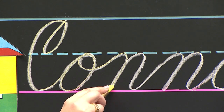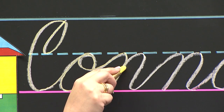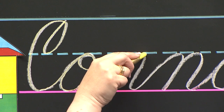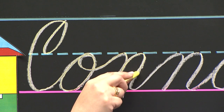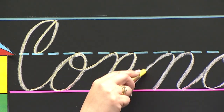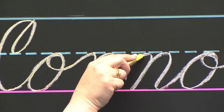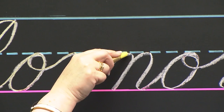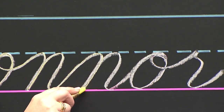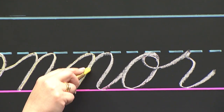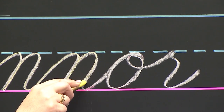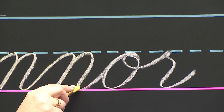I retrace back up the same line, and I curve at the dotted line. I come down to the pink carpet, and I go right back up to the dotted line. I curve around down to the pink carpet, retrace back up the same line, curve around down to the pink carpet.